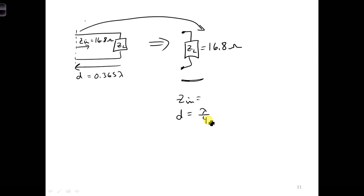If you plug that into our ZN equation, well first we're going to need a value for beta D, which is two pi over lambda times lambda over four, which is pi over two.